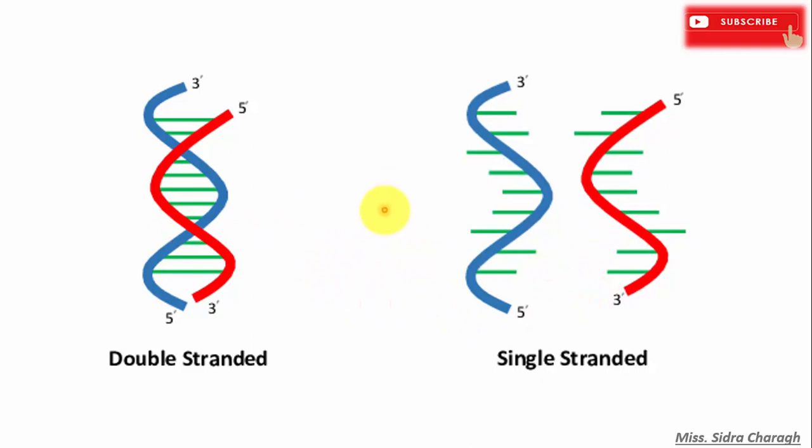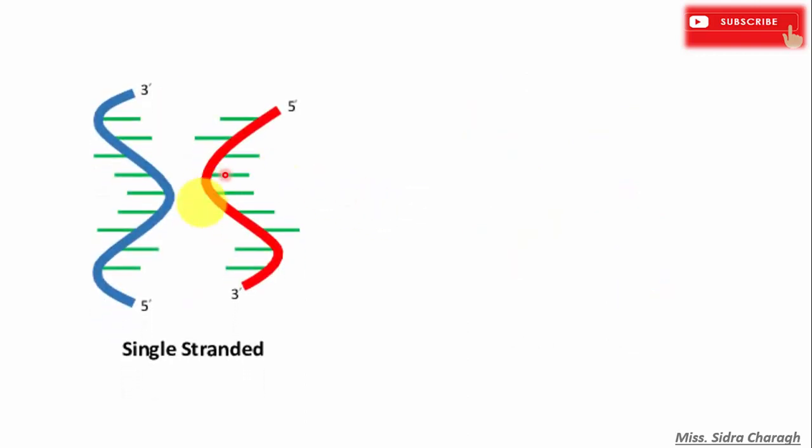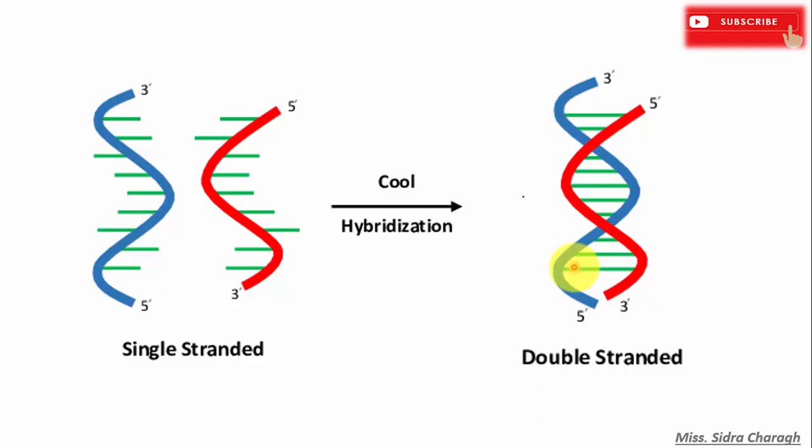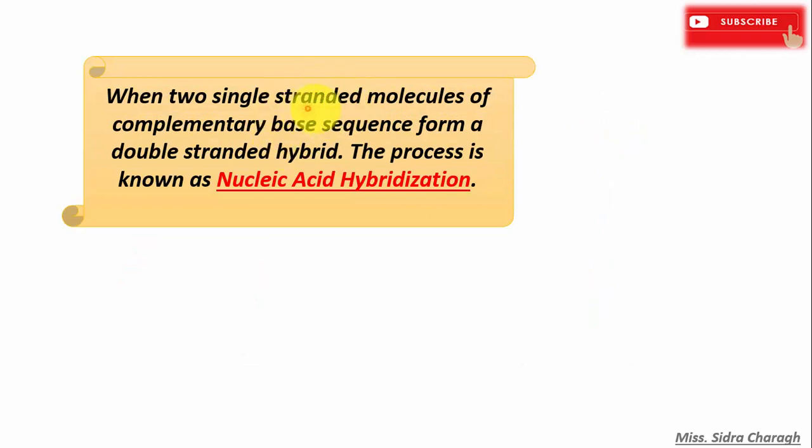And this process is known as denaturation of DNA. Now if the single-stranded DNA is incubated under some appropriate condition, then they will convert or renature to form a double-stranded DNA molecule. Now two single-stranded DNA molecules having complementary base pairing form a double-stranded DNA hybrid, and this process is known as nucleic acid hybridization.